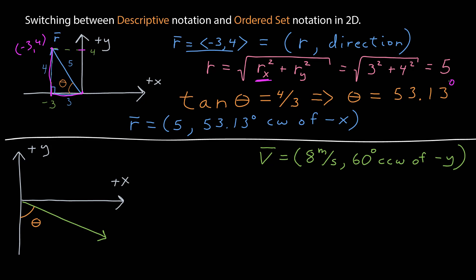Well, what does that look like? Here I have a coordinate system and my vector counterclockwise of the negative y is an angle theta, which I know to be 60 degrees.